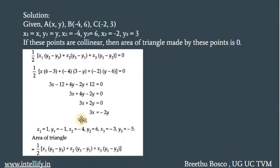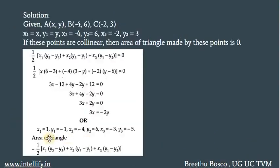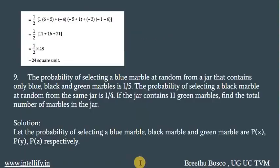The second part of question 8: find the area of the triangle whose vertices are (1, −1), (−4, 6) and (−3, −5). Applying the formula for area of triangle: half into X1(Y2 − Y3) + X2(Y3 − Y1) + X3(Y1 − Y2). From the given points, X1 = 1, Y1 = −1, X2 = −4, Y2 = 6, X3 = −3 and Y3 = −5. Substituting the values, you will get half into (11 + 16 + 21), that is half into 48, which is equal to 24 square units. That is the area of the triangle.